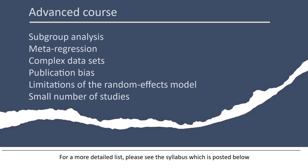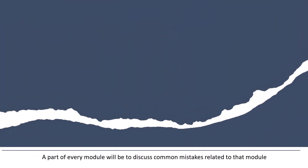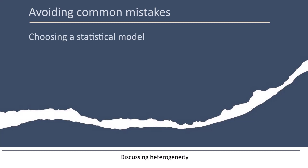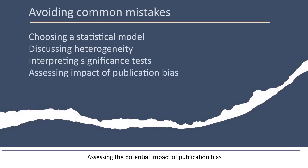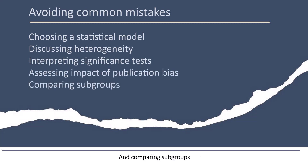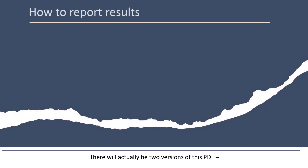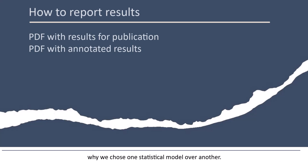For a more detailed list, please see the syllabus, which is posted below. A part of every module will be to discuss common mistakes related to that module. This includes common mistakes related to choosing a statistical model, discussing heterogeneity, interpreting significance tests, assessing the potential impact of publication bias, and comparing subgroups. You'll also learn how to report the results in a paper. For each analysis, I'll provide a PDF of the results that can serve as a template for your own analyses — there will be two versions: one intended for publication, and a second with annotations that explain, for example, why we chose one statistical model over another.